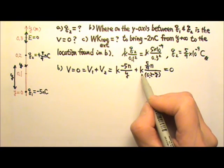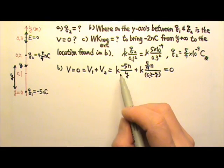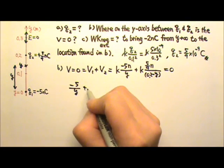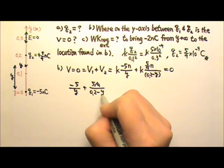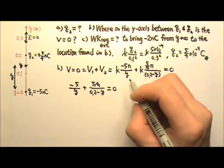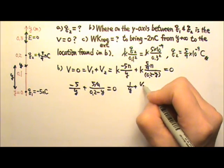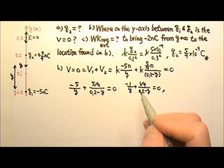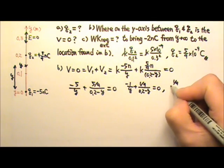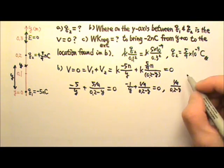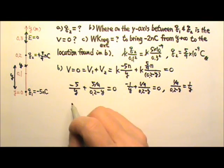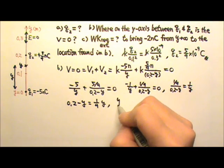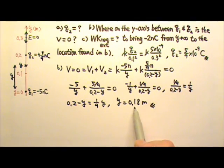Dividing both sides by K and by nano, we get: negative 5 over y plus 5 ninths divided by 0.2 minus y equals zero. Dividing by 5 on both sides gives: negative 1 over y plus 1 ninths divided by 0.2 minus y equals zero. Moving terms, 1 ninths divided by 0.2 minus y equals 1 over y. Cross-multiplying gives 0.2 minus y equals 1 ninths times y, and solving gives y equals 0.18 meters. That's where the potential is zero.